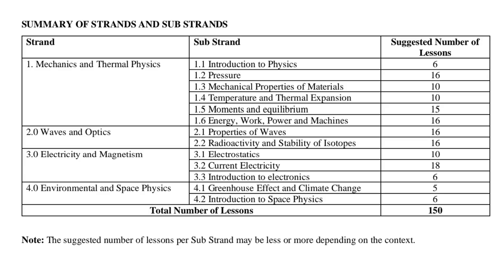The second strand is waves and optics. The substrands under that are properties of waves, radioactivity, and stability of isotopes. The third strand is electricity and magnetism, covering electrostatics, current electricity, and introduction to electronics. The fourth strand is environmental and space physics, with substrands on greenhouse effect and climate change, and introduction to space physics.